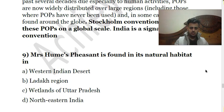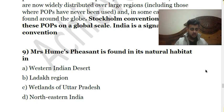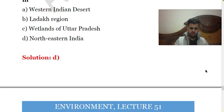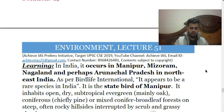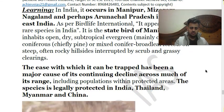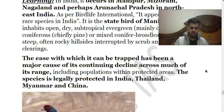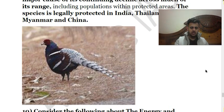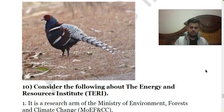Ninth question: Hume's Pheasant is found in its natural habitat in: A, Western Indian desert; B, Ladakh region; C, Badlands of Uttar Pradesh; D, Northeastern India. The correct answer is D — Northeastern India. It is found in northeastern Indian states such as Nagaland, Mizoram, and Manipur. It has been trapped easily, which is a major cause of its decline. It is legally protected in India, Thailand, Myanmar, and China.